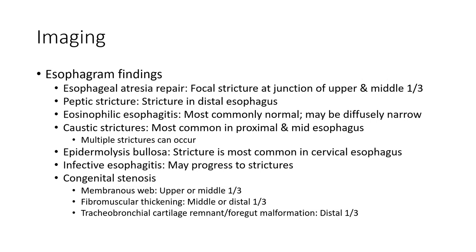Regarding particular imaging findings by cause: eosinophilic esophagitis is most commonly normal, or may show diffuse linear furrowing, most common in the proximal and mid esophagus, and multiple strictures can occur. Epidermolysis bullosa stricture is most common in the cervical esophagus. Infective esophagitis may progress to stricture. Congenital stenosis subtypes include membranous web with upper or middle onset, fibromuscular thickening with middle or distal onset, and tracheobronchial cartilage remnant with distal onset.